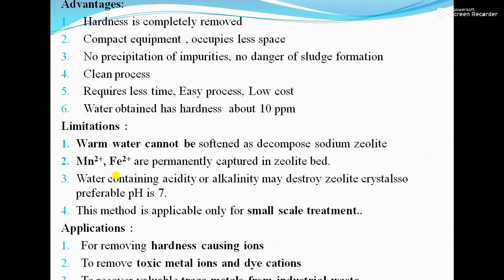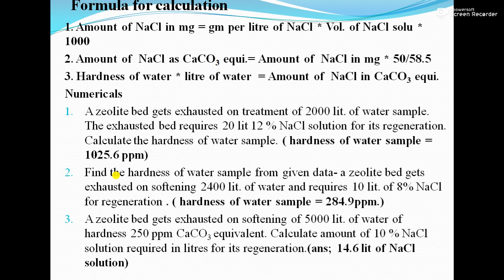The formulas for calculation in zeolite numericals are three stepwise formulas. Formula 1: Amount of NaCl (mg) = gram per liter of NaCl × volume of NaCl (L) × 1000. Formula 2: Amount of NaCl as CaCO₃ equivalent = Amount of NaCl (mg) × 50 / 58.5. Formula 3: Hardness of water × liters of water = Amount of NaCl as CaCO₃ equivalent.